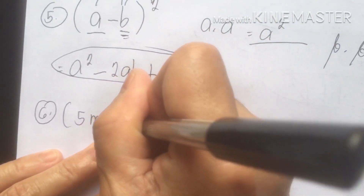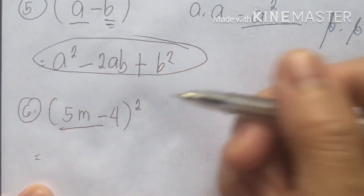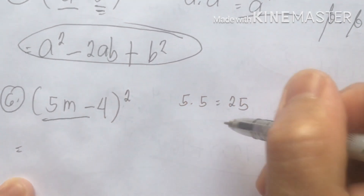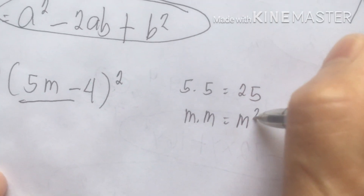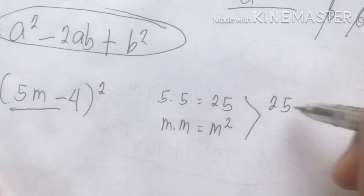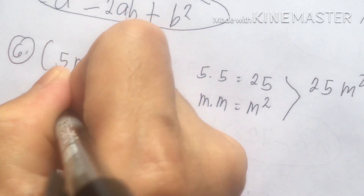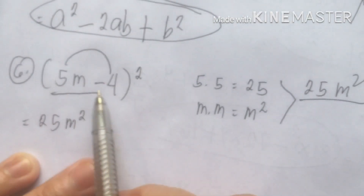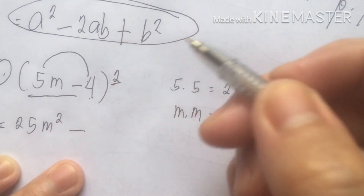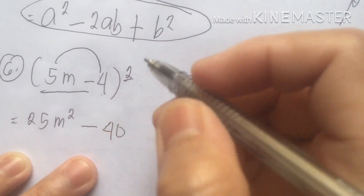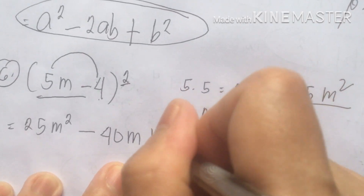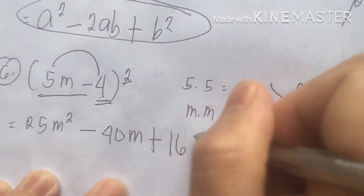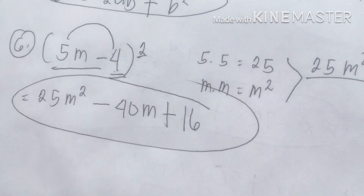Let's proceed to number six: (5m − 4) squared. Same procedure — first term: 5 times 5 is 25, m times m is m squared, so 25m squared. Then the product of the first and second terms: 5 times 4 is 20, times 2 is 40, giving minus 40m. Then the second term: 4 times 4 is 16. So the answer is 25m squared minus 40m plus 16.